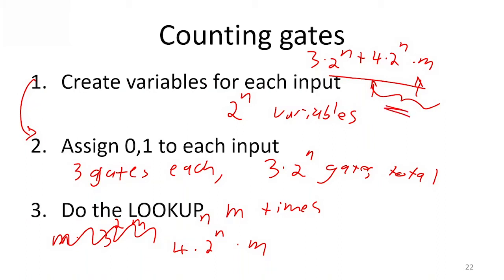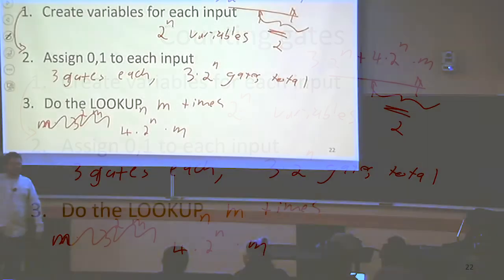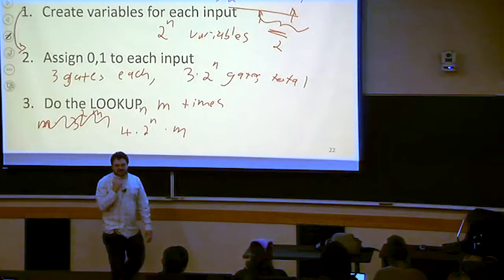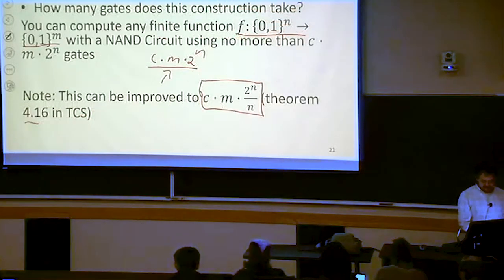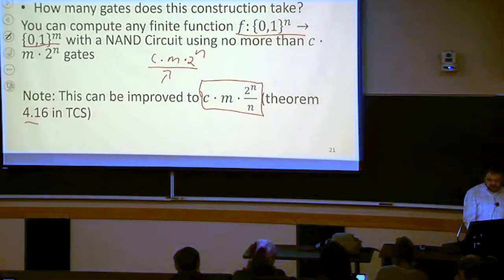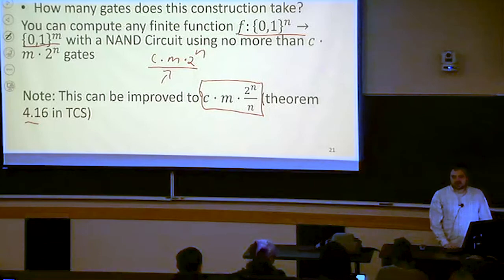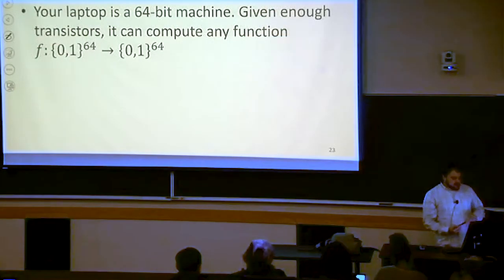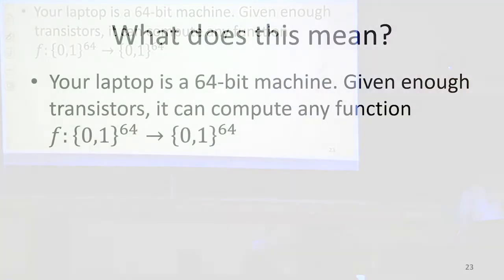And then this 3 times 2 to the n, we can think of that as being washed away by another constant. If I just multiply this whole thing over here by 2, then I can just get rid of that additive thing over there. This tells us that we're going to have a c times m times 2 to the n many gates. I just washed away a bunch of constants. That's something computer scientists like to do. There exists a c such that no function requires more than c times m times 2 to the n gates.